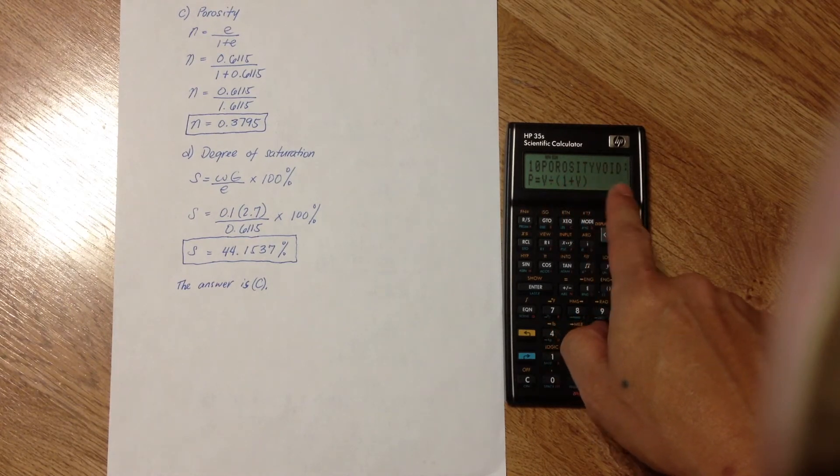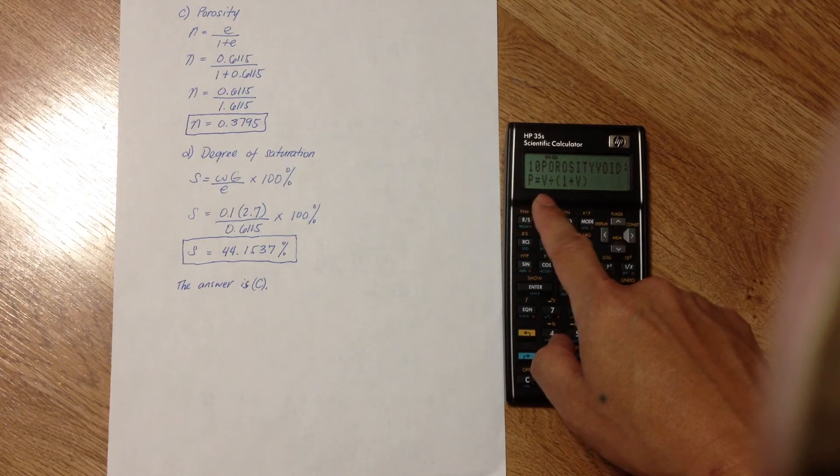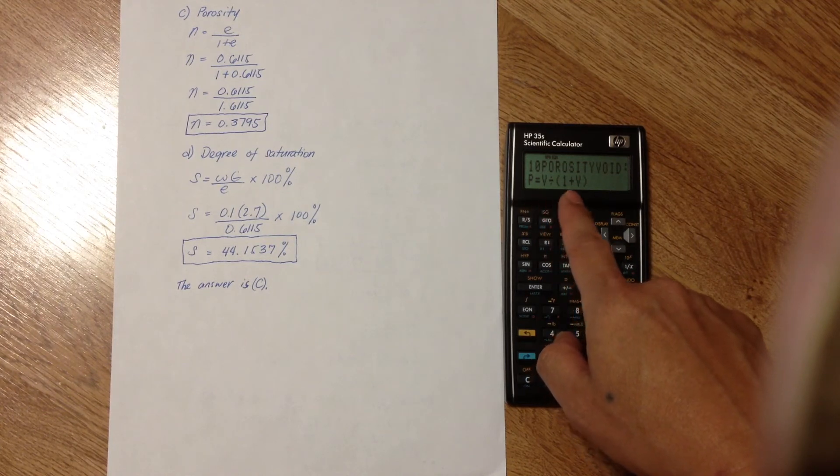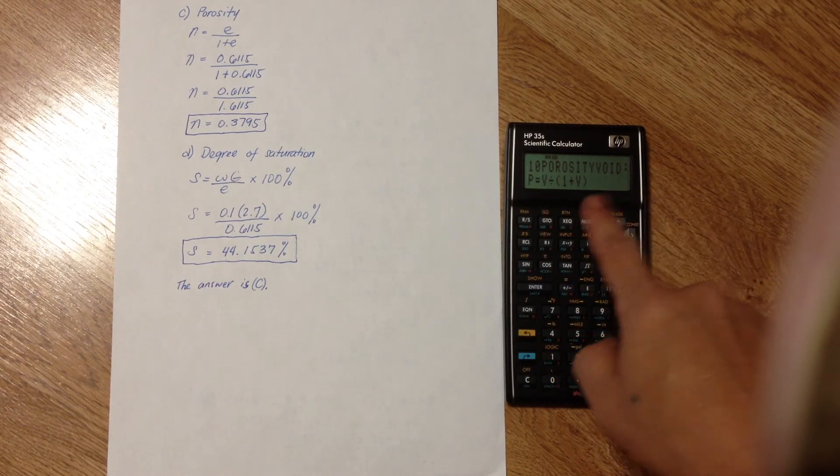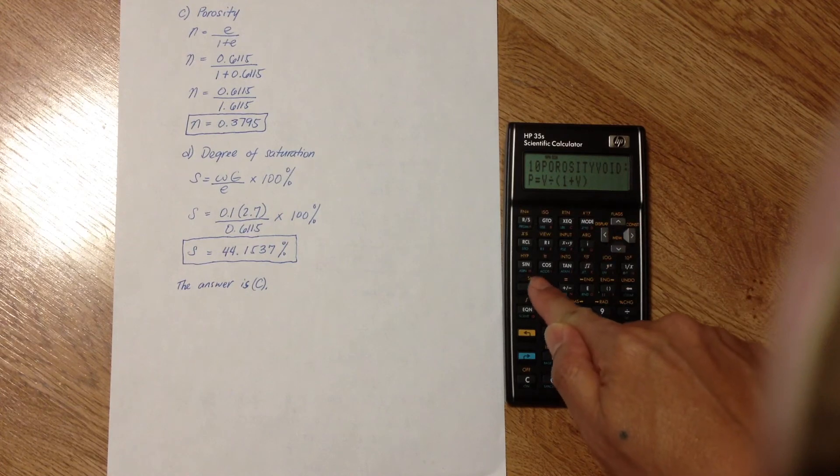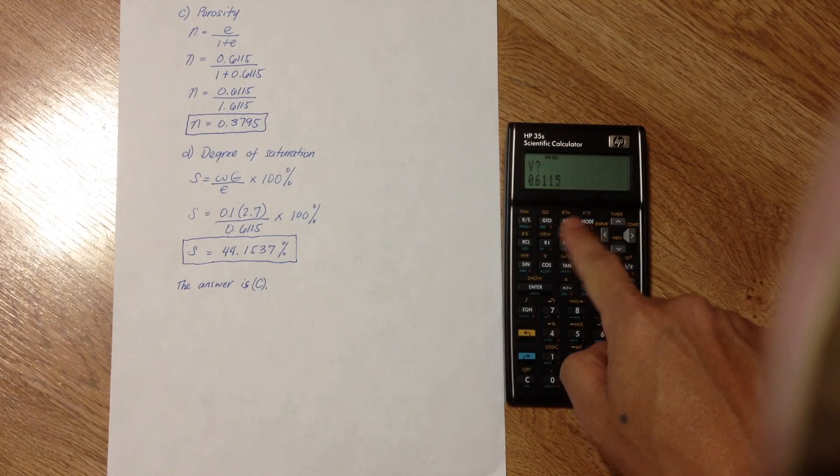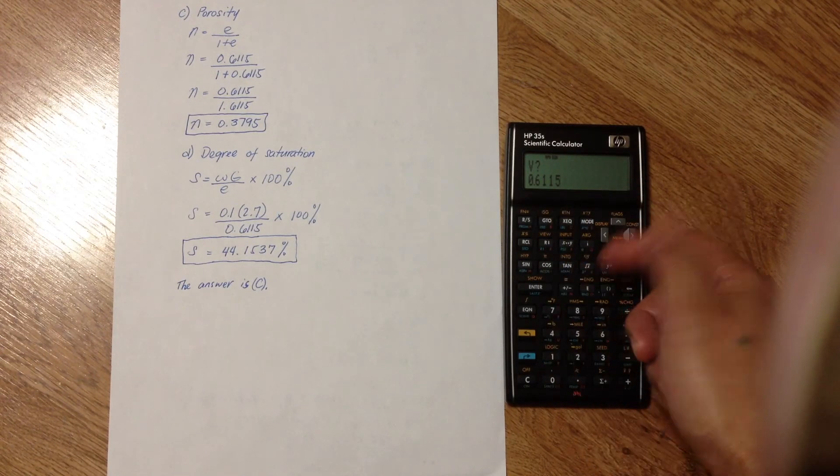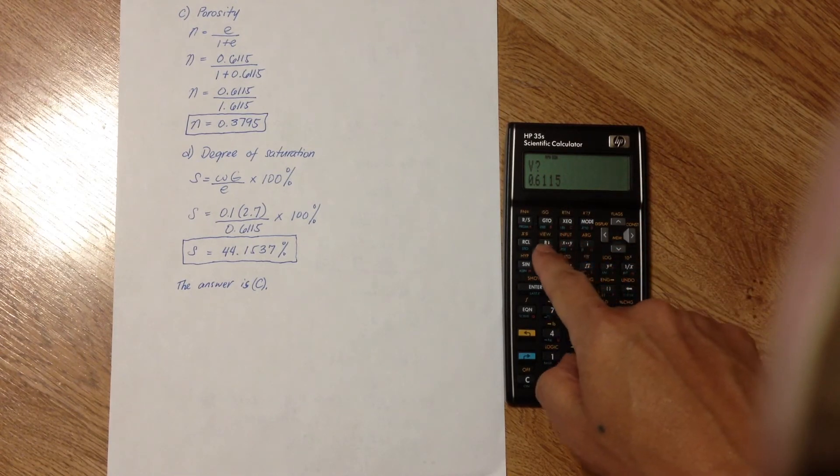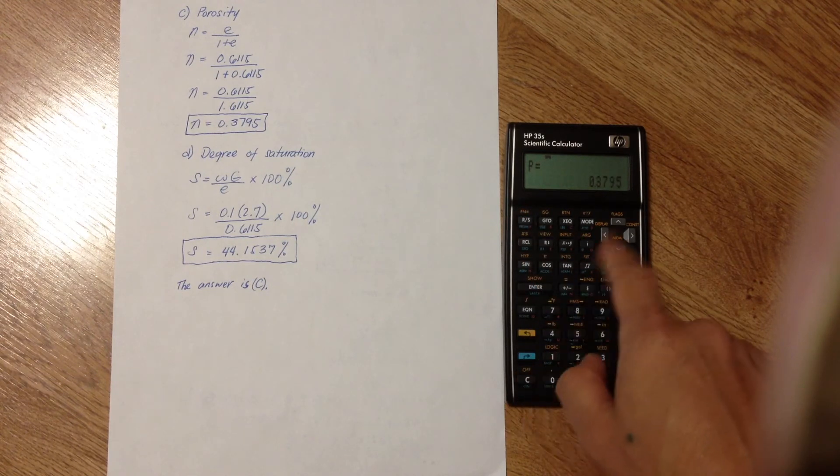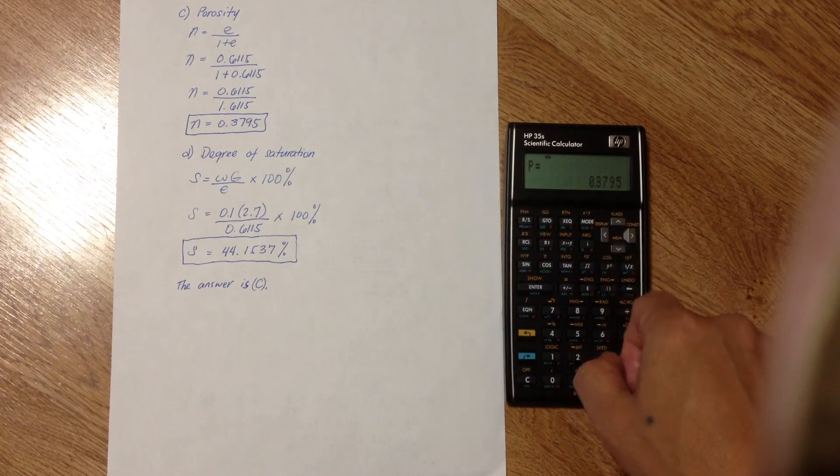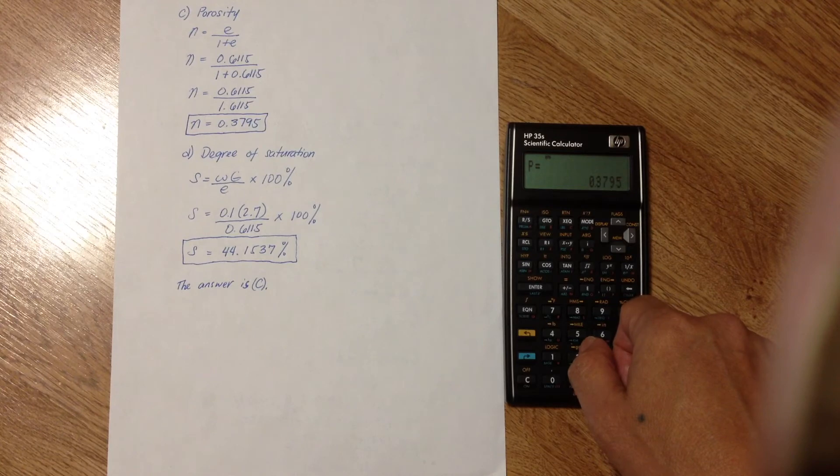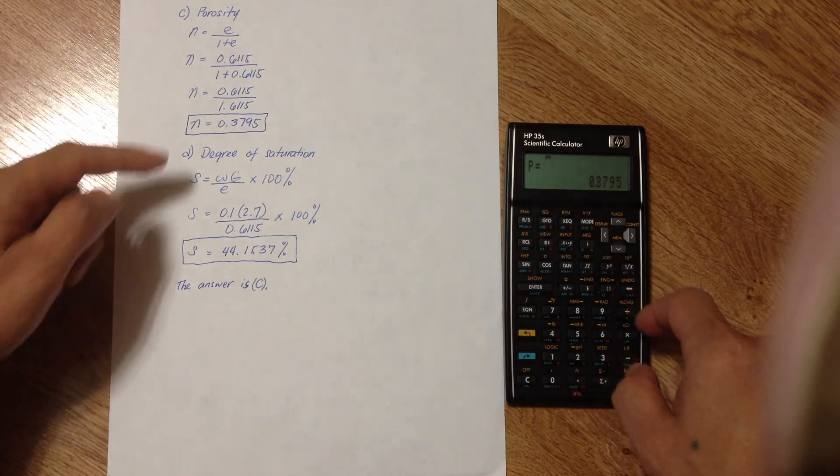Porosity void. P is the porosity, and V is the void ratio. Now, just press Enter. And it will show you the void ratio of 0.615. That's what we need. So, just press RS. And that's the porosity of 0.3795, which is correct.